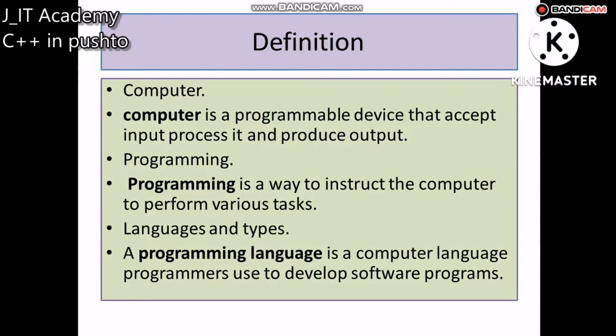The definition starts with the computer. There are many different definitions of computer. The computer definition is that a computer is a programmable device that accepts input, processes it, and produces output. It means that the input will be processed and output will be produced.